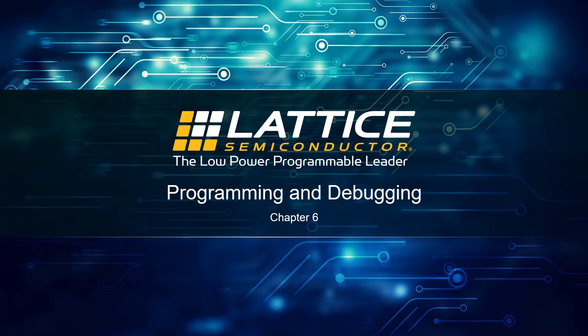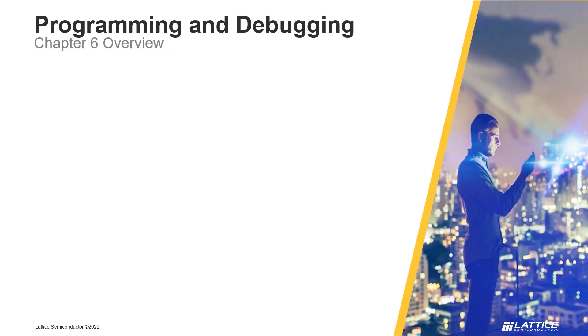Chapter 6: Programming and Debugging. In this section of the Radiant introductory training series, we will discuss the general flow for programming a device and debugging it on physical hardware. Chapter 6 consists of four sections.